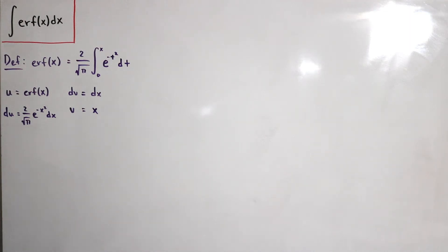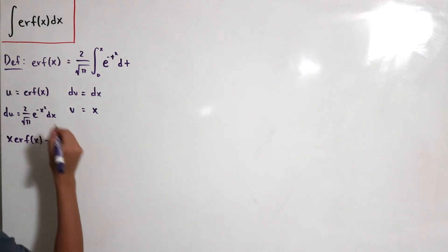And we just do our integration by parts formula: u times v minus the integral of v du. So let's see, x times the error function of x and subtract this with the integral of v du.